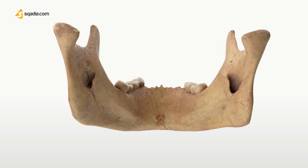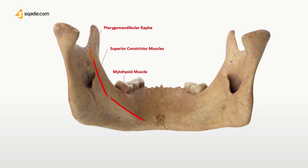The mylohyoid line gives origin to the mylohyoid muscle. Just posterior to it is the attachment of the superior constrictor muscle of the pharynx, followed by the attachment of the pterygomandibular raphe. The upper genial tubercles give origin to the genioglossus, and the lower tubercles to the geniohyoid. The digastric fossa lodges the anterior belly of the digastric muscle.